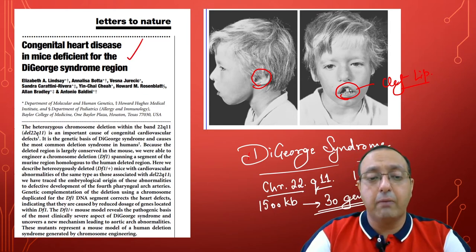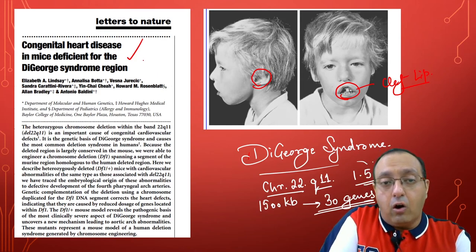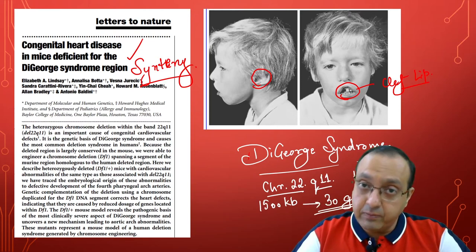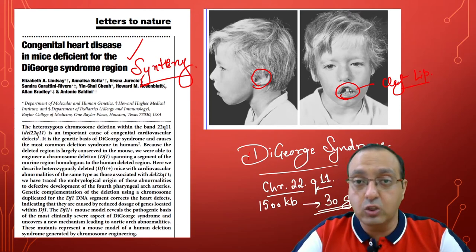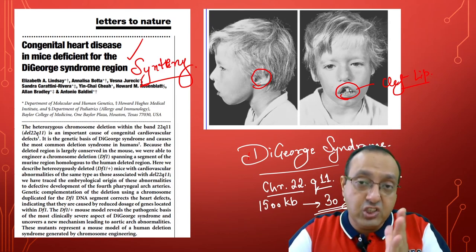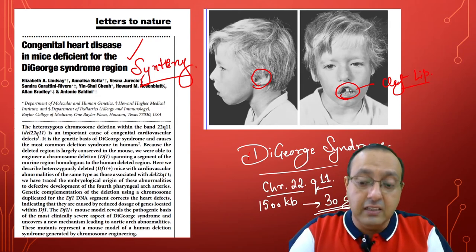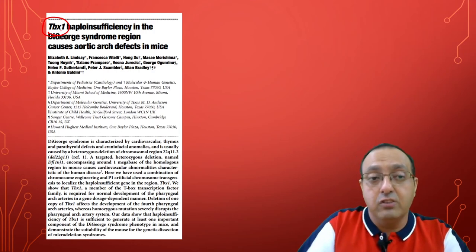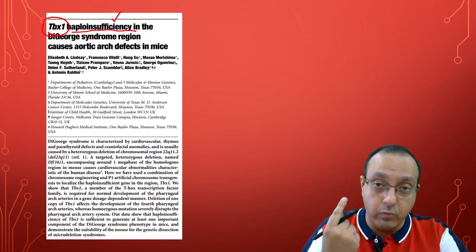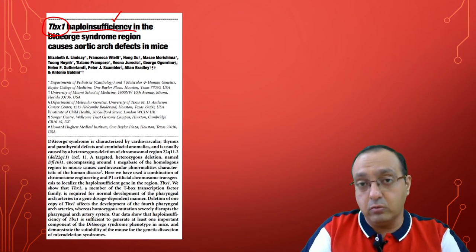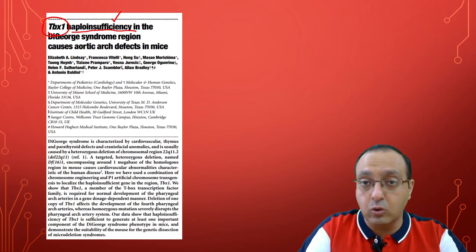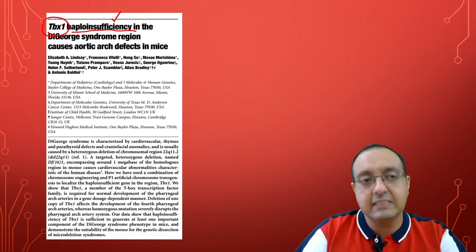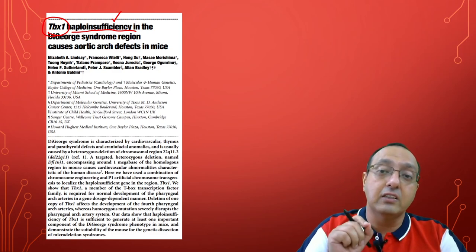By systematically removing chunks of this region using the CRE-LOXP system, researchers found that it was one transcription factor called TBX1 — T-box transcription factor 1 — and its haploinsufficiency that caused the syndrome. Haploinsufficiency means the gene must be present in two copies; having only one copy causes problems. This discovery could not have been made in cells or any other model organism — the mouse was the right system, and this work unraveled the role of TBX1 in DiGeorge syndrome.